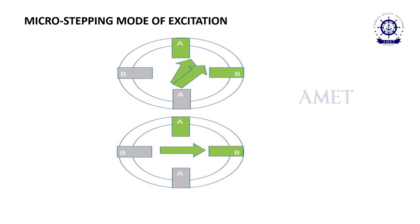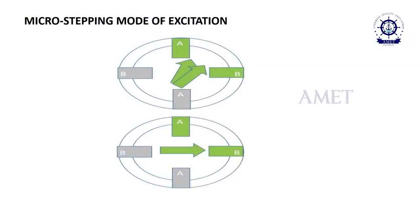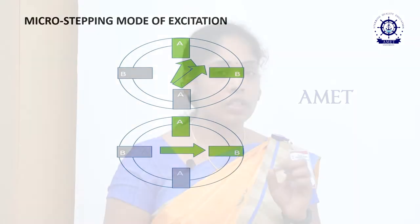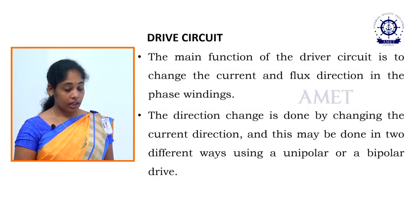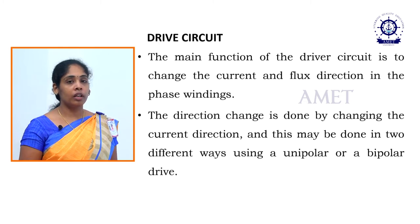At last, we have micro-stepping mode of excitation. We have many advantages using this, but it requires a large torque, so we do not prefer micro-stepping much. Normally the half step mode of excitation is used for most applications. Micro-stepping means the motor moves by very small degrees, for example 1.8 degrees at a time — very slow steps. To go from A to B it requires a minimum of four micro-steps to reach B, meaning one full step.